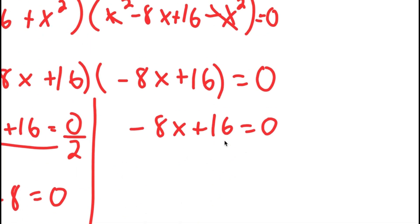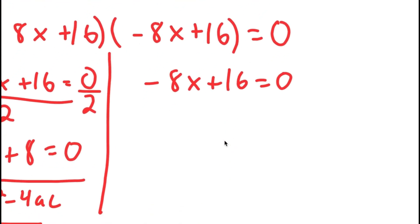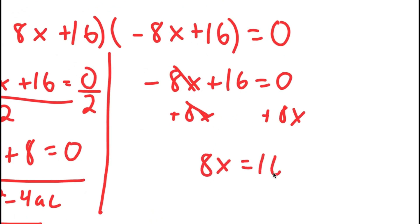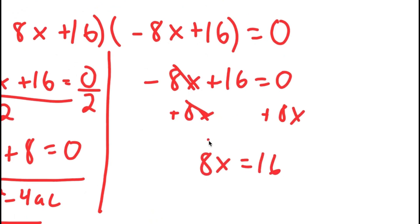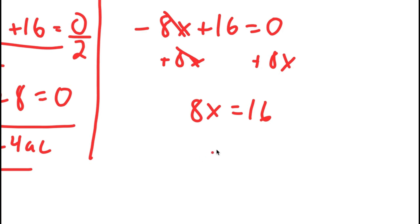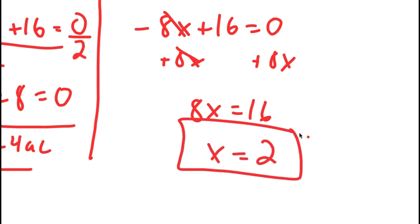For my second equation, I have −8x + 16 = 0. Adding 8x on both sides gives 8x = 16, meaning x = 2. So I have three solutions to this equation: x = 2 + 2i, x = 2 − 2i, and x = 2.